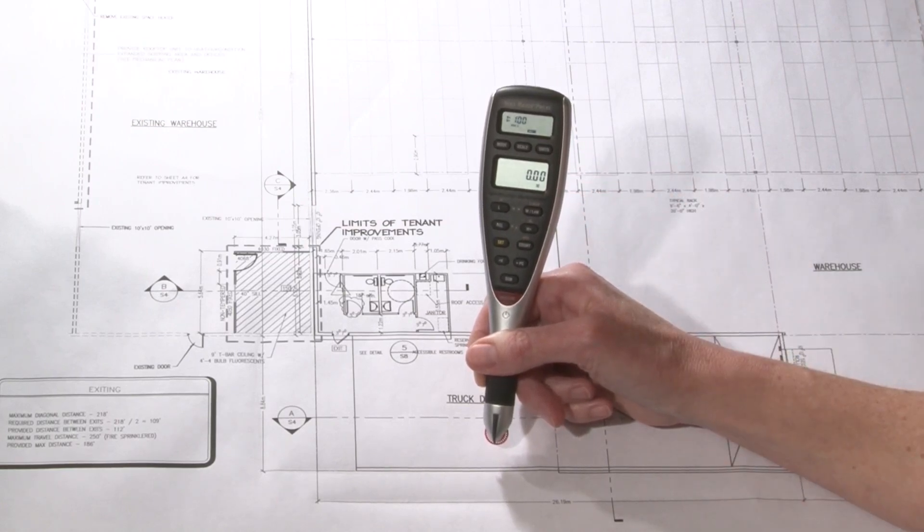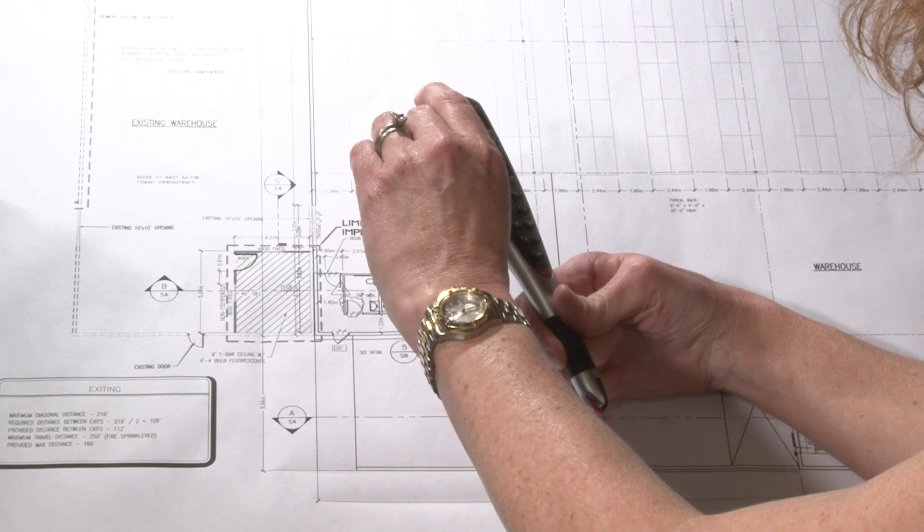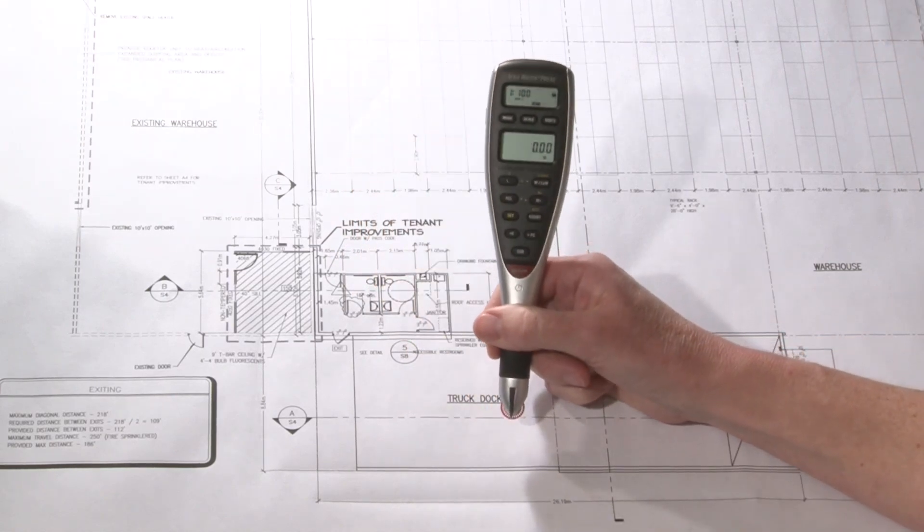Now that I've verified the mode, scale, and units needed for this takeoff, I'm going to click the lock button on the side so I don't change any of those settings by mistake when I'm doing the takeoff later.